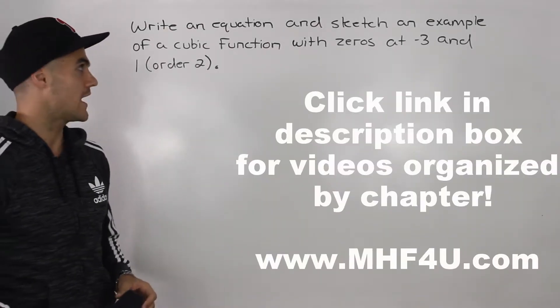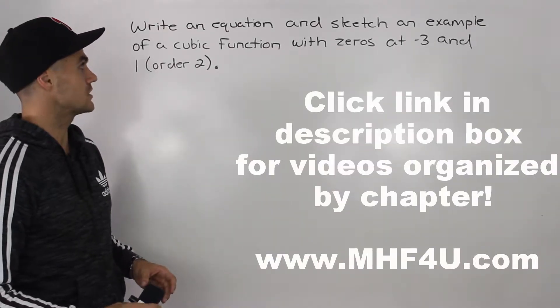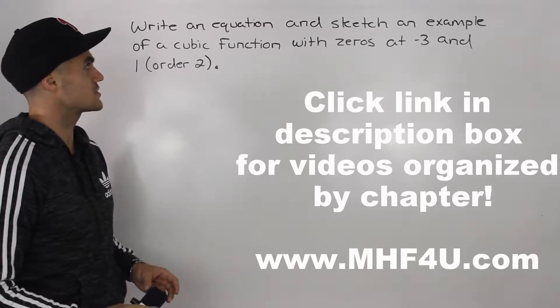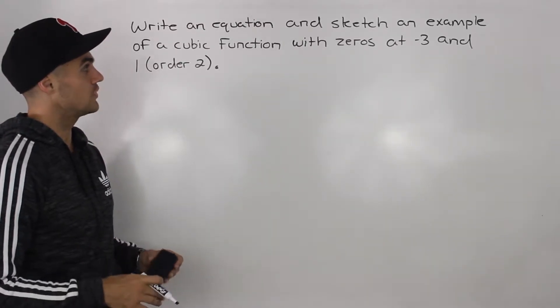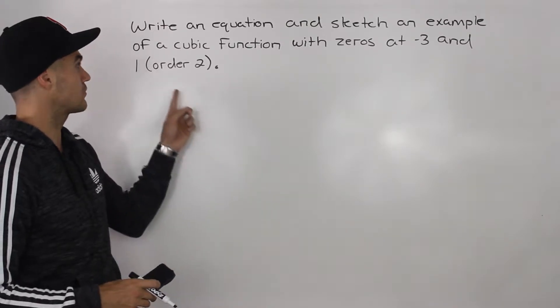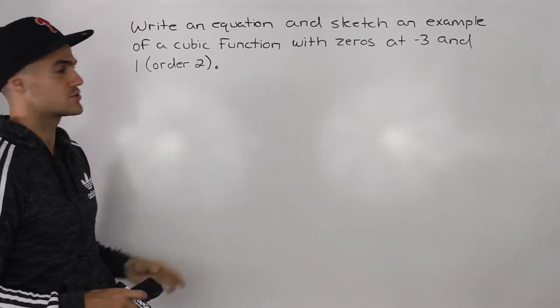What's up everybody? Patrick here. Welcome back. We have another question to do with polynomial functions. So we have to write an equation and sketch an example of a cubic function with zeros at negative 3 and positive 1 that has an order 2.